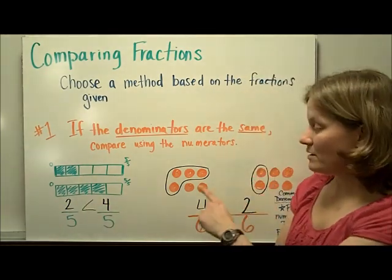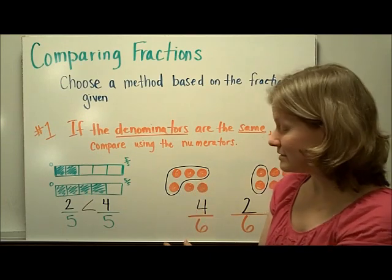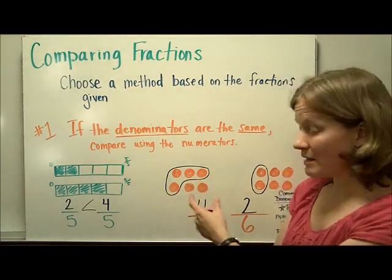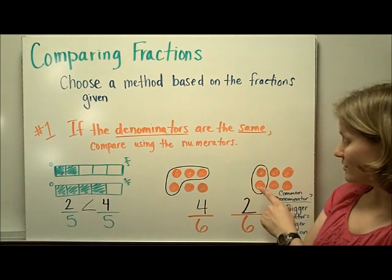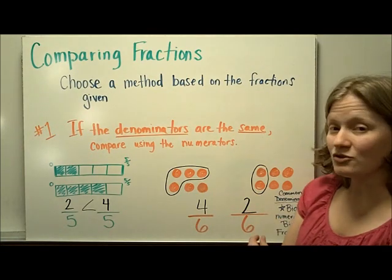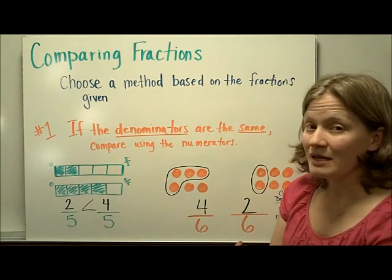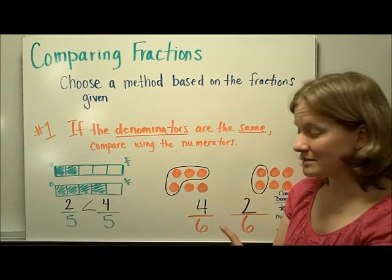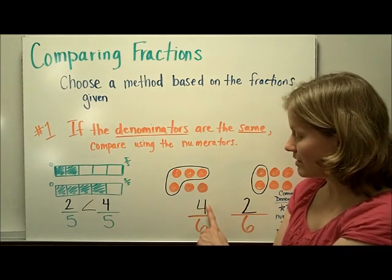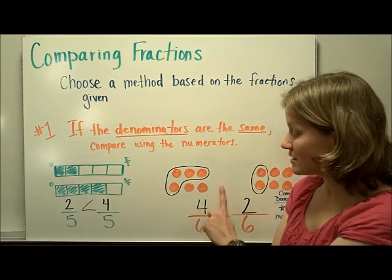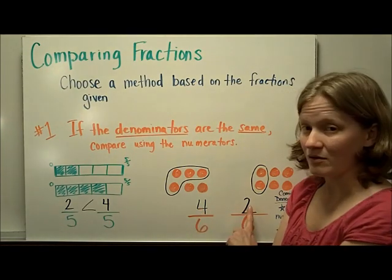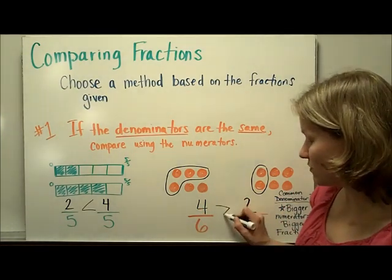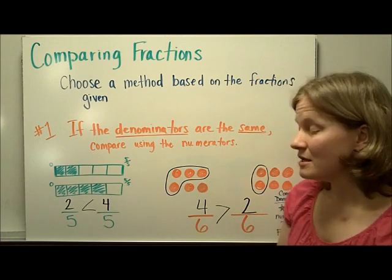In this set model, we see that there are six pieces in the set and four are circled. In the other, we also have six pieces in the set and two are circled. It's easy to see, because there's the same number of items in the set, that if we just compare the numerators, this fraction is bigger than this one. So four-sixths is greater than two-sixths.